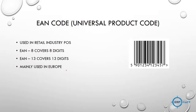EAN is similar to UPC and is used in the retail industry, but for Europe. EAN-8 covers 8 digits and EAN-13 covers 13 digits. The last digit is a checksum — it is calculated using a formula applied to all the other digits. During scanning, the formula is reapplied and if the result doesn't match, it flags an error with the barcode.